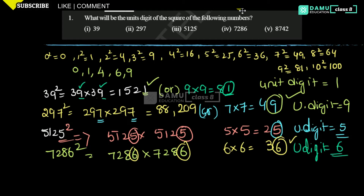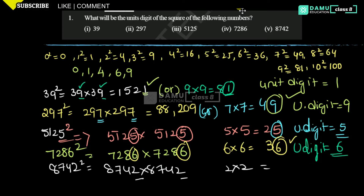Then our last one is 8742 whole square. Square means we need to multiply 2 times. Here the unit digit is 2, so 2 into 2 = 4. Unit digit will be equal to 4. Like this, we need to solve for the unit digit.